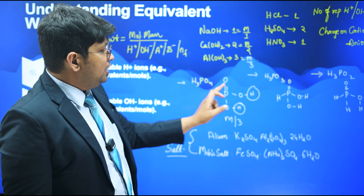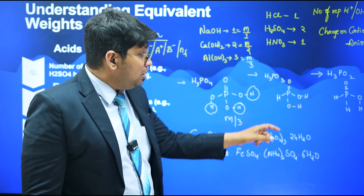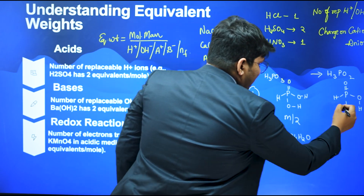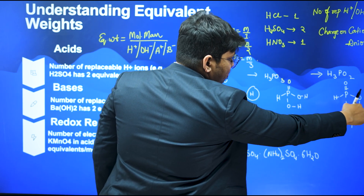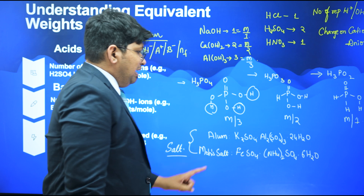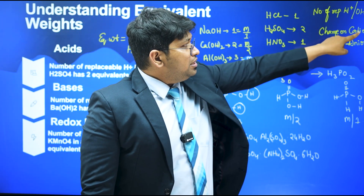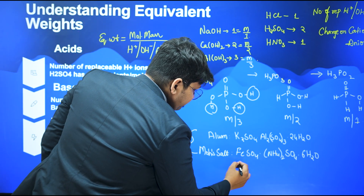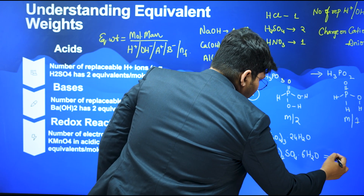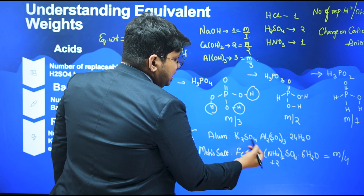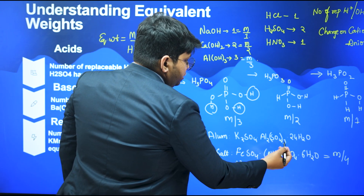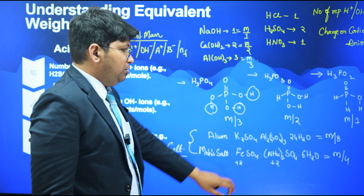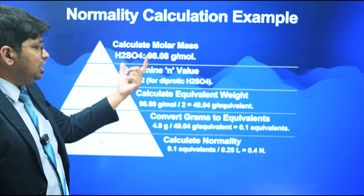For salts, the n-factor is the charge on the cation or anion. For example, if the charge on the cation is +2 and there are relevant ions, the equivalent weight = M/4. In another salt example, if the anion charge is -2 and combining gives a total n-factor of 8, then equivalent weight = M/8. These are step-by-step calculations to determine equivalent weights for different types of compounds.